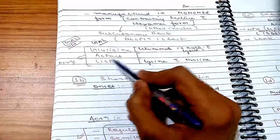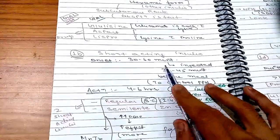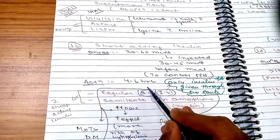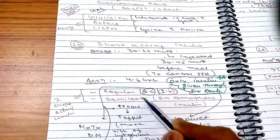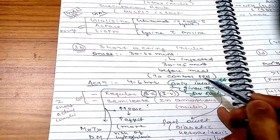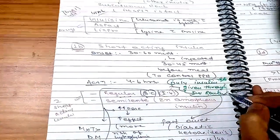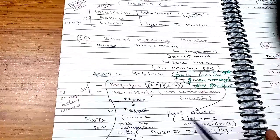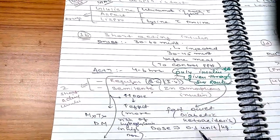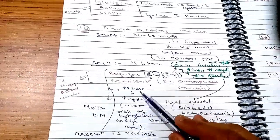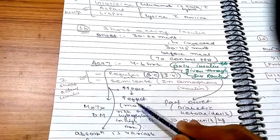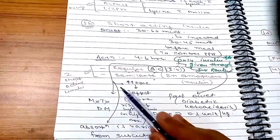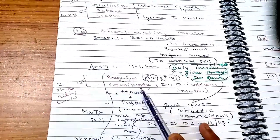The second group is short acting insulin: onset 30–60 minutes, injected 30–45 minutes before meals to control postprandial hyperglycemia, duration 4–6 hours. Drugs: regular insulin and semilente. It is given subcutaneously and also through IV in emergencies. Regular insulin is the only insulin given through IV route — given in diabetic ketoacidosis at 0.1 unit/kg. At high doses via subcutaneous route, there is more risk of hypoglycemia as absorption is variable. Regular insulin is also used for maintenance treatment of diabetes.